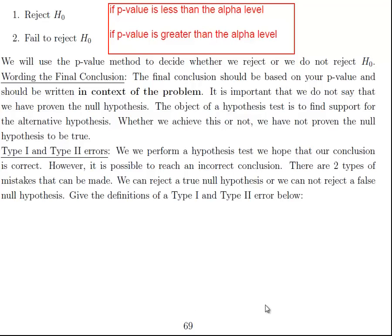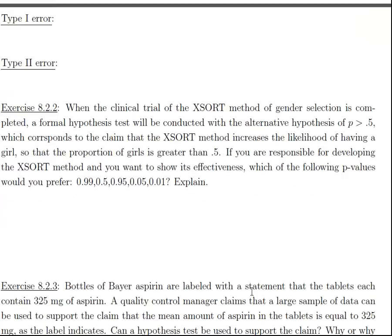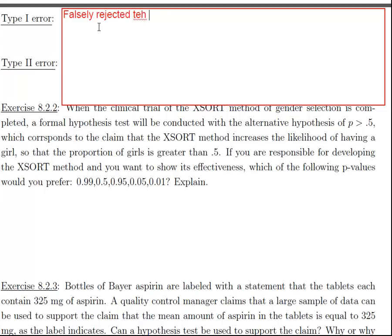Just two more definitions and then we'll work on some problems. Because we can always get a sample that's not representative of our population, there's always a chance that we can make either what we call a type 1 or a type 2 error. These are errors and so that means that we did something wrong. Of course we don't know that we're going to do something wrong, but the idea is that there's always the possibility. A type 1 error means you falsely rejected the null hypothesis. However, the null hypothesis is actually true. So you made a mistake. You rejected the null because your p-value is small, but the null hypothesis is true.